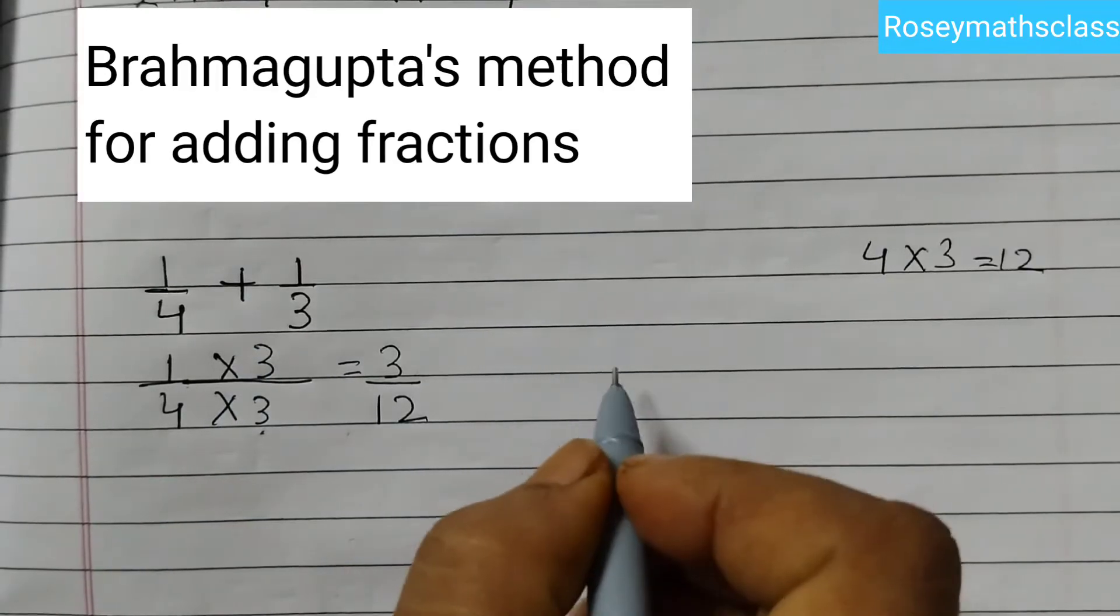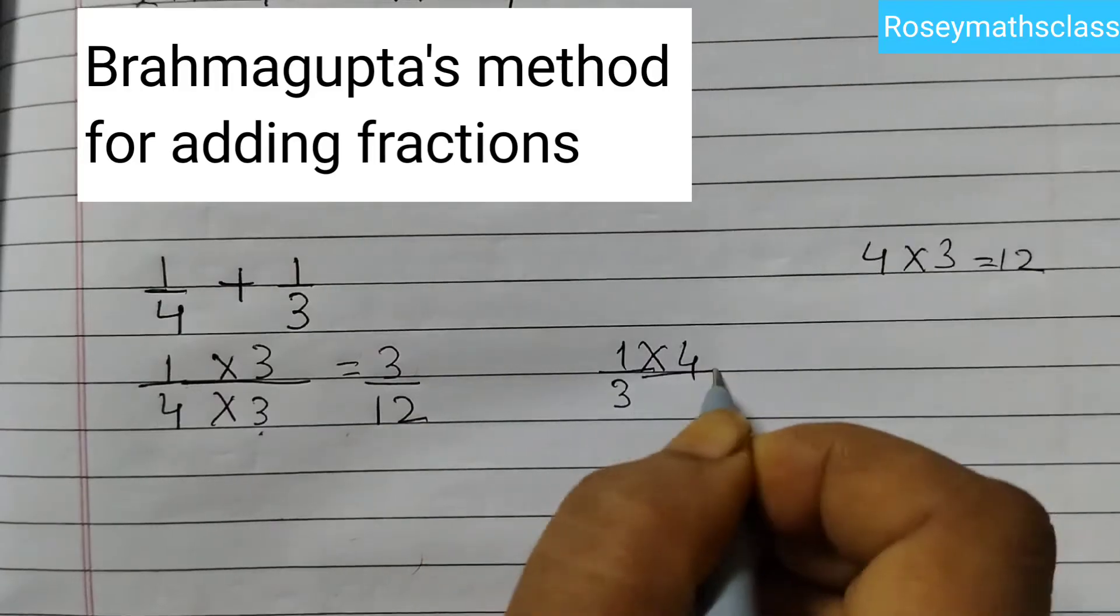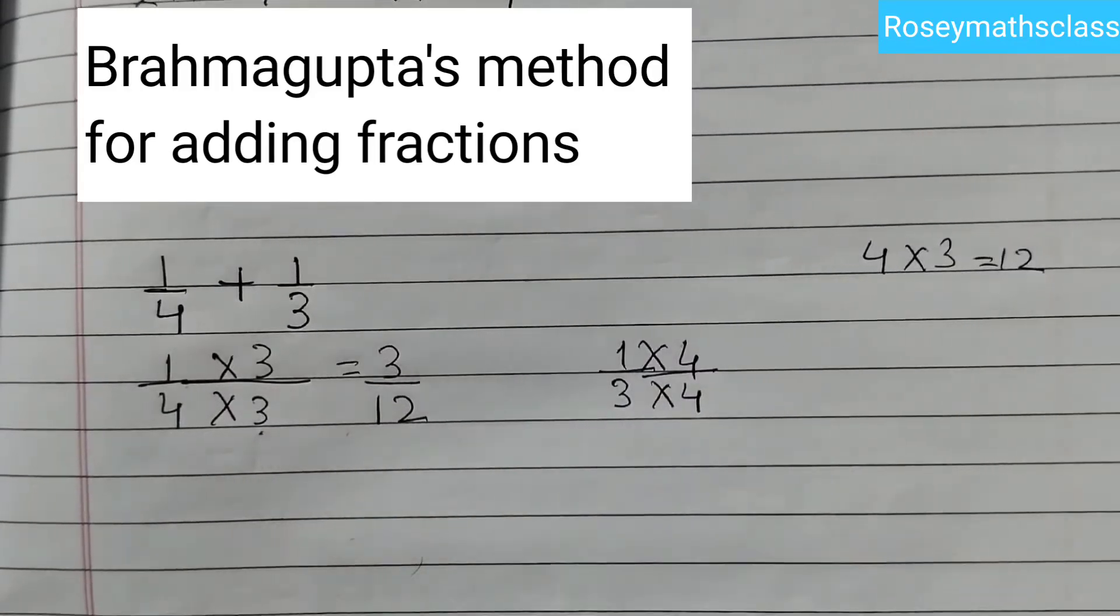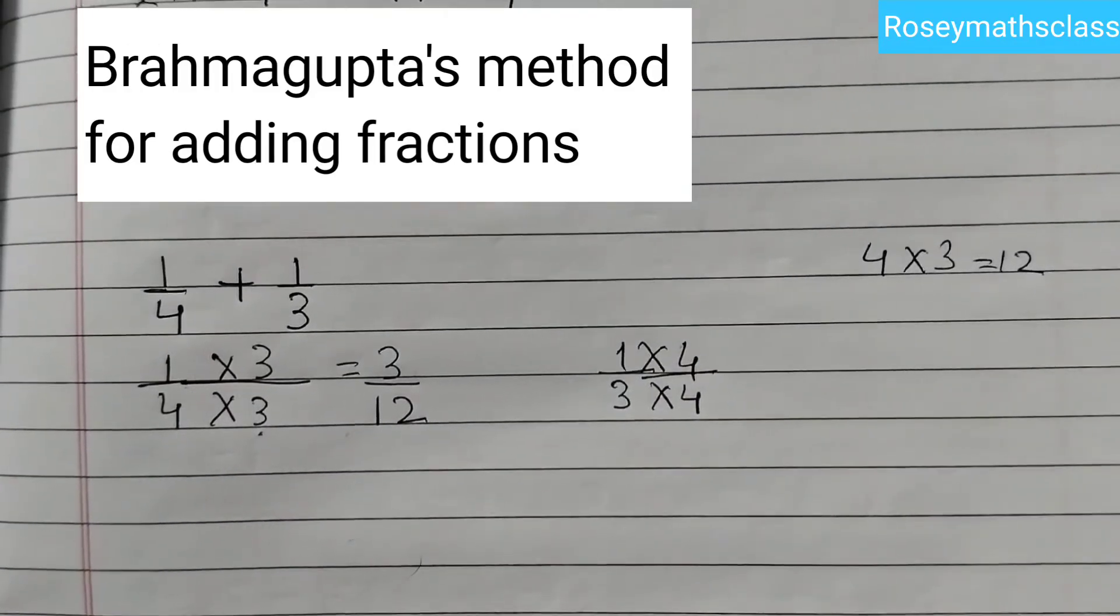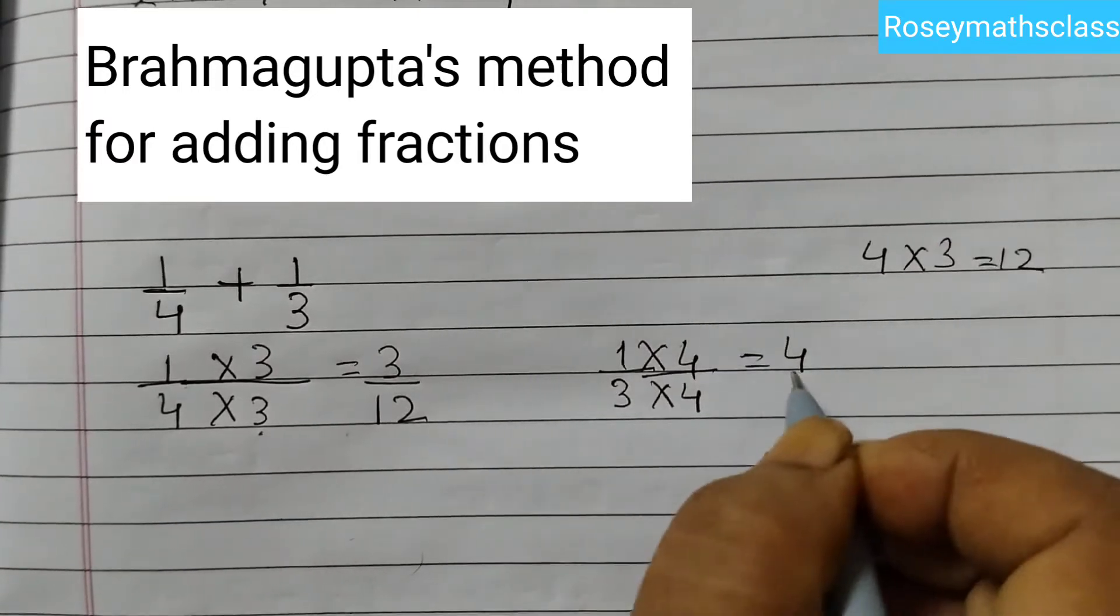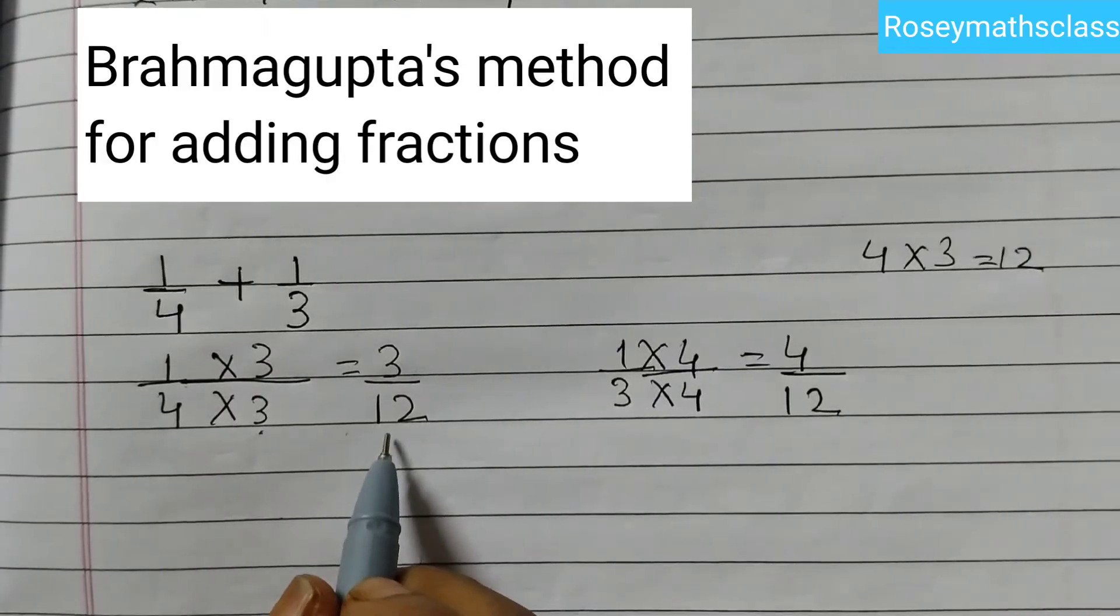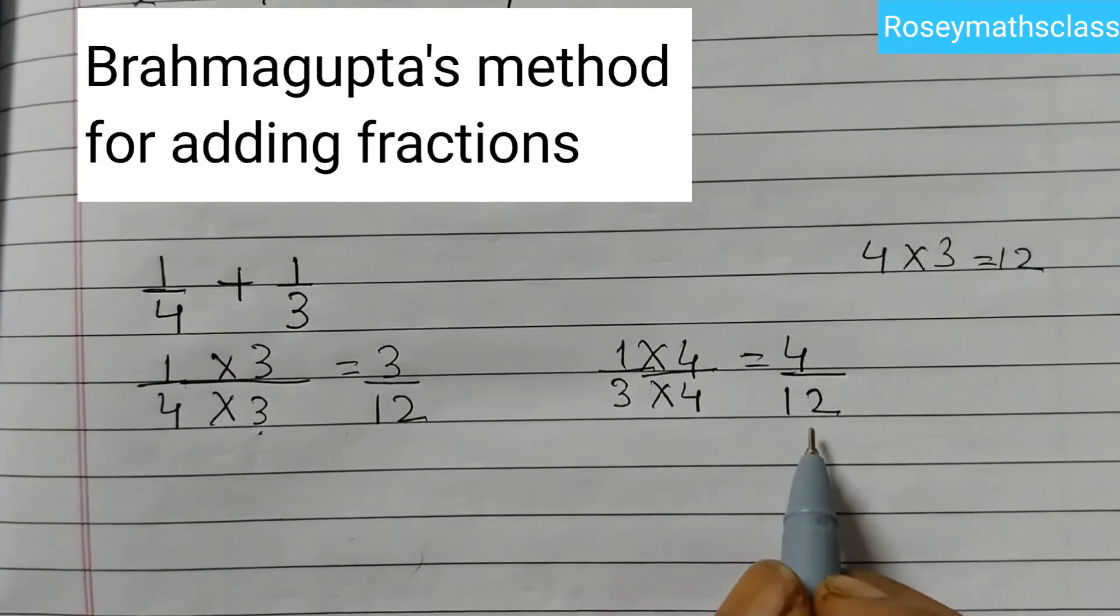And now for 1 by 3, we will multiply by 4. Both numerator and denominator, we are going to multiply by 4. So 1 into 4 is 4, 3 into 4 is 12. Now you see here, the denominator is 12. So same fractional unit.